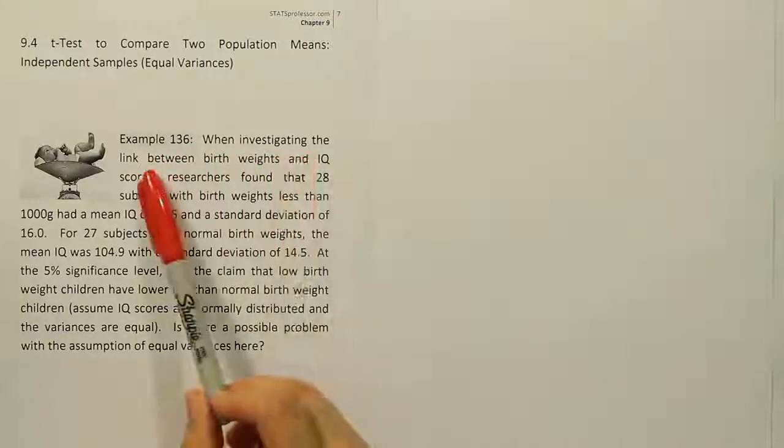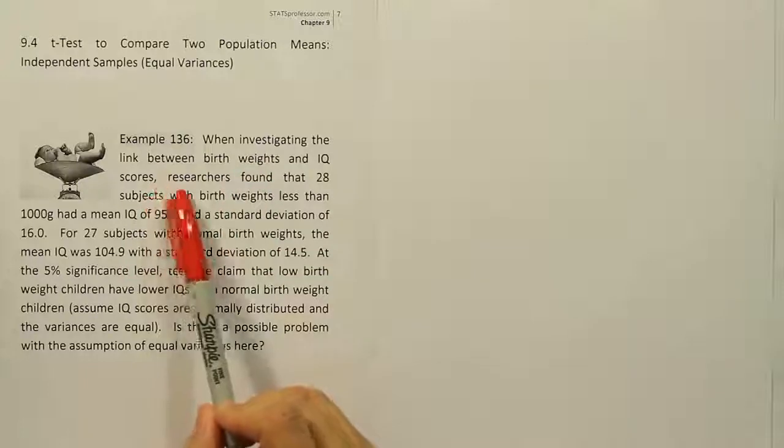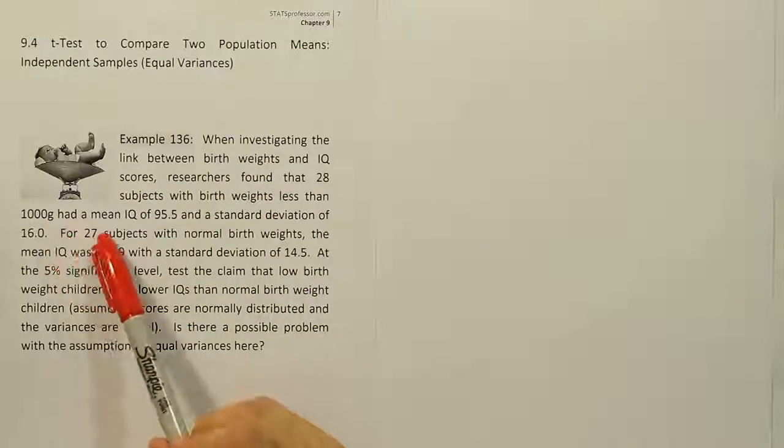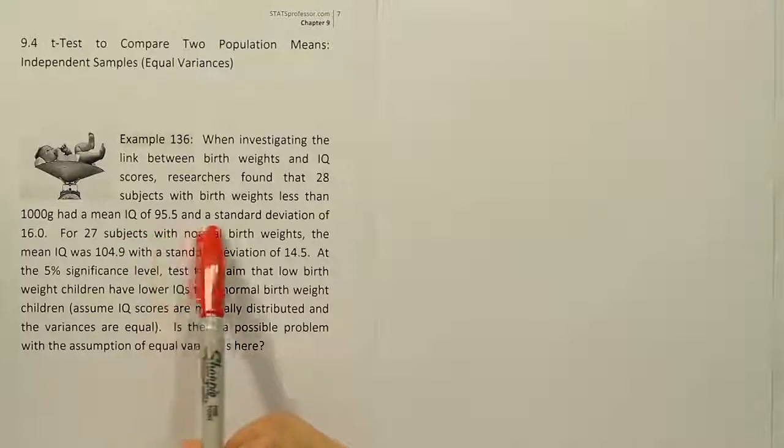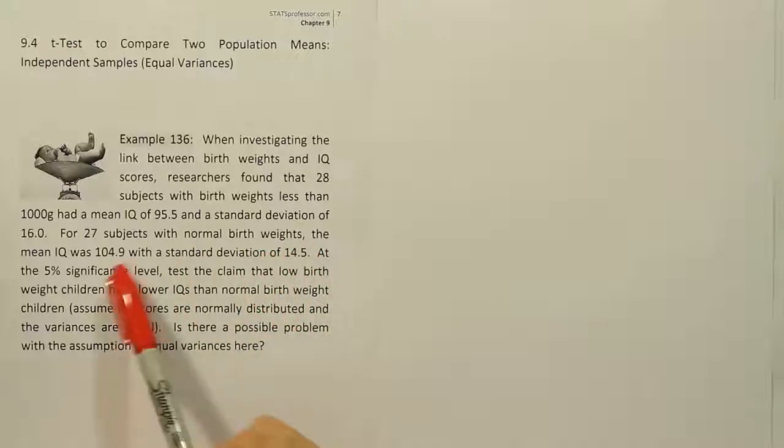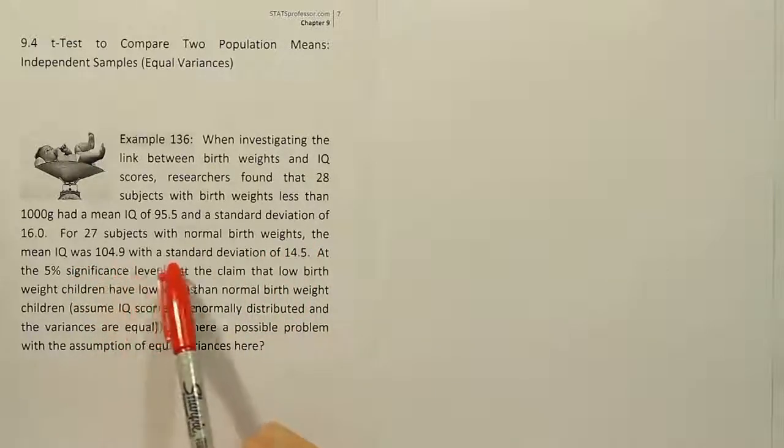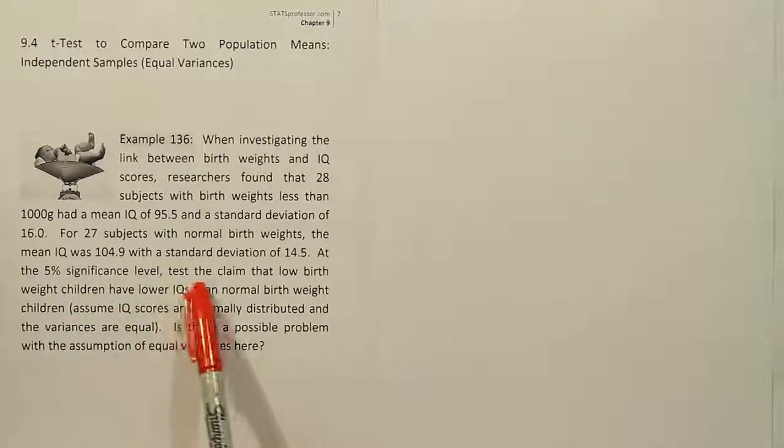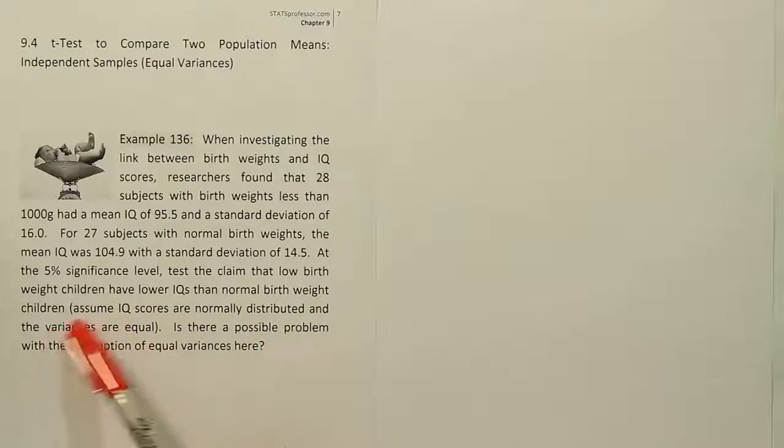Example 136. When investigating the link between birth weights and IQ scores, researchers found that 28 subjects with birth weights less than 1000 grams had a mean IQ of 95.5 and a standard deviation of 16.0. For 27 subjects with normal birth weights, the mean IQ was 104.9 with a standard deviation of 14.5. At the 5% significance level, test the claim that low birth weight children have lower IQs than normal birth weight children. Assume IQ scores are normally distributed and the variances are equal. Is there a possible problem with the assumption of equal variances here?